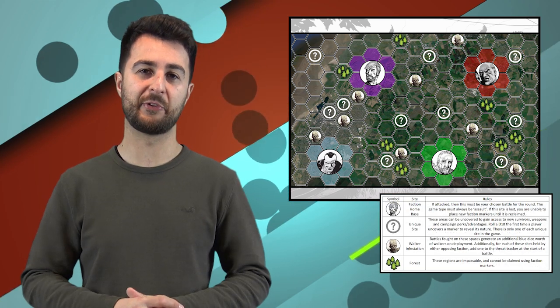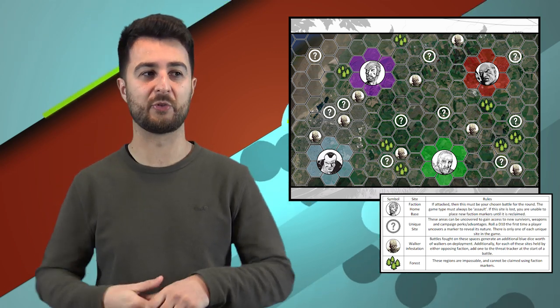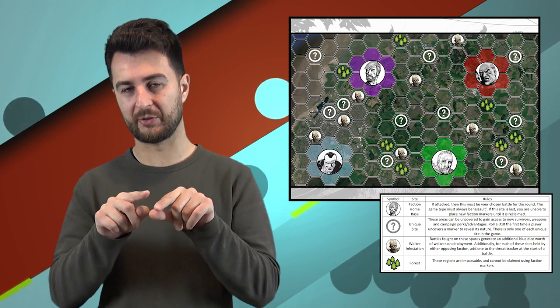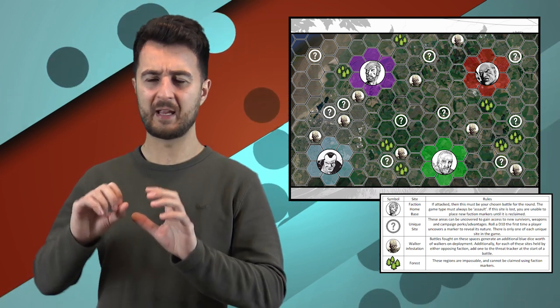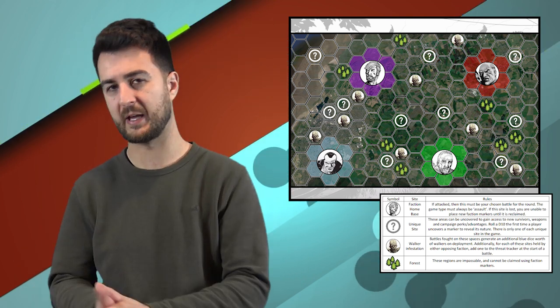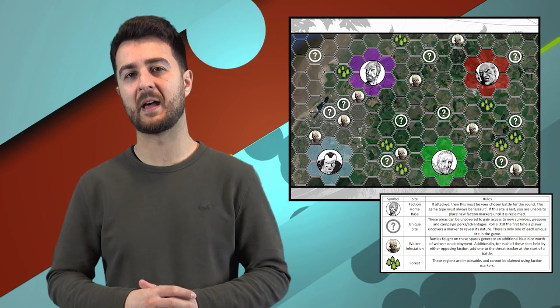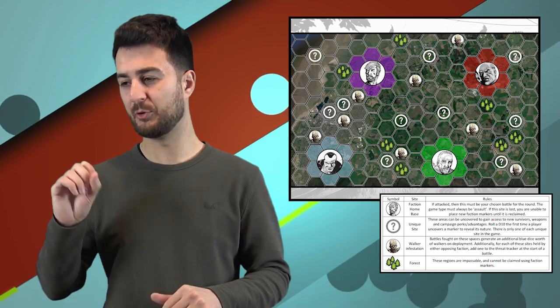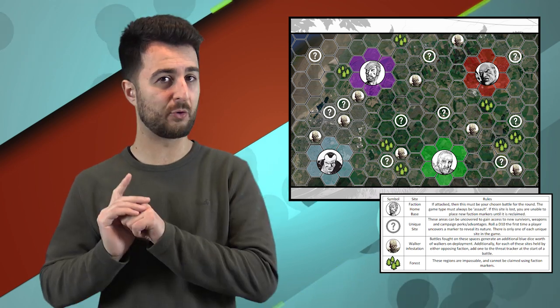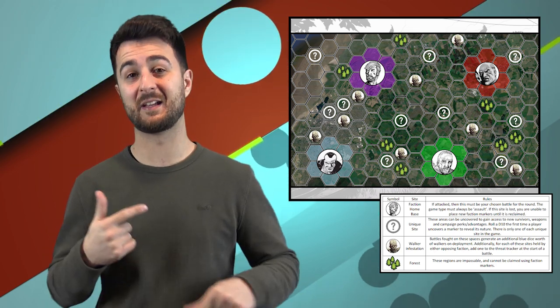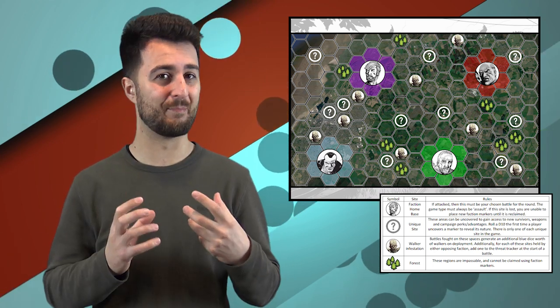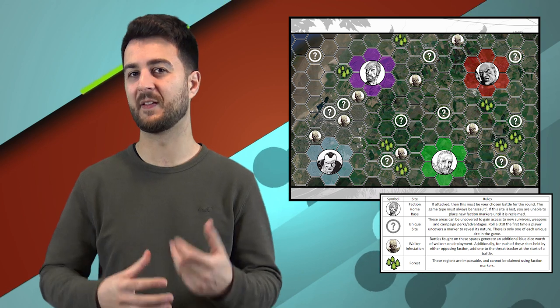Aside from that, there are trees which are impassable areas, and walker tokens representing incredibly infested areas. For aggressive players, if you control walker areas and fight a battle on that hex, it spawns more walkers. Even if you're fighting elsewhere, it increases the threat tracker by one at the start, meaning you can start at low or even medium threat for quite high-stakes battles.